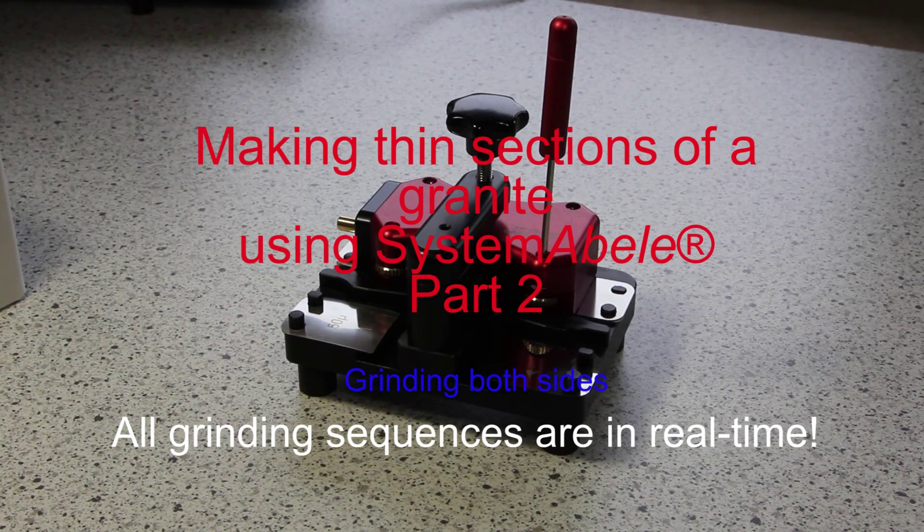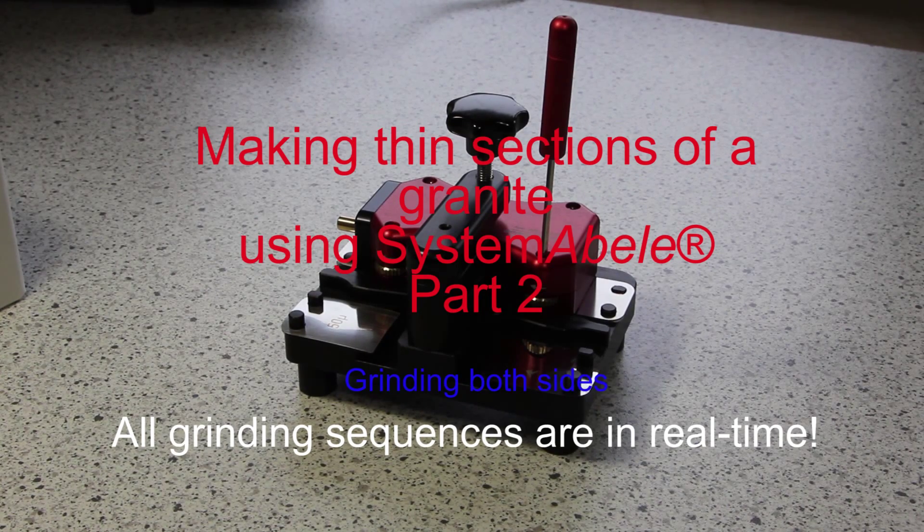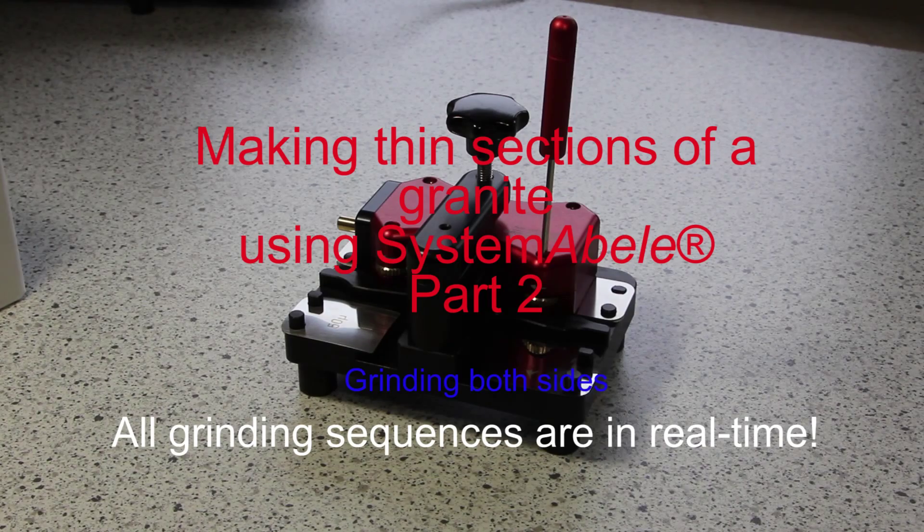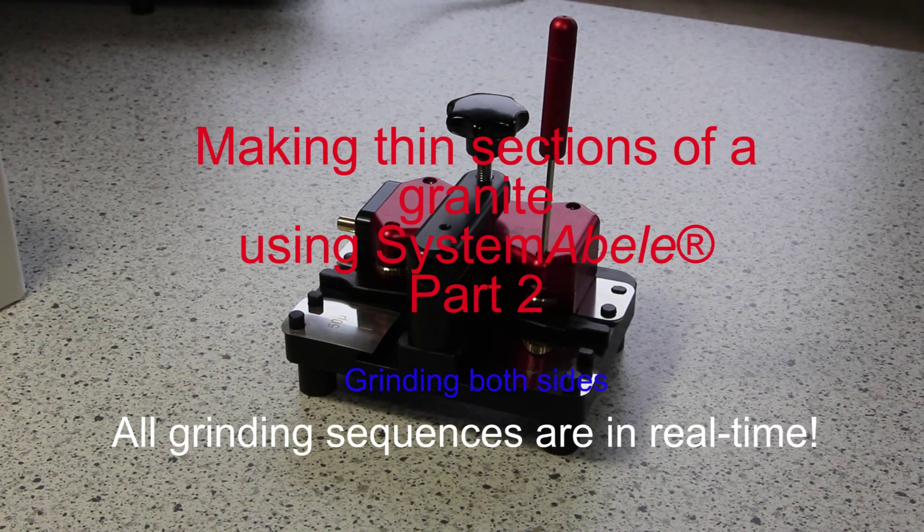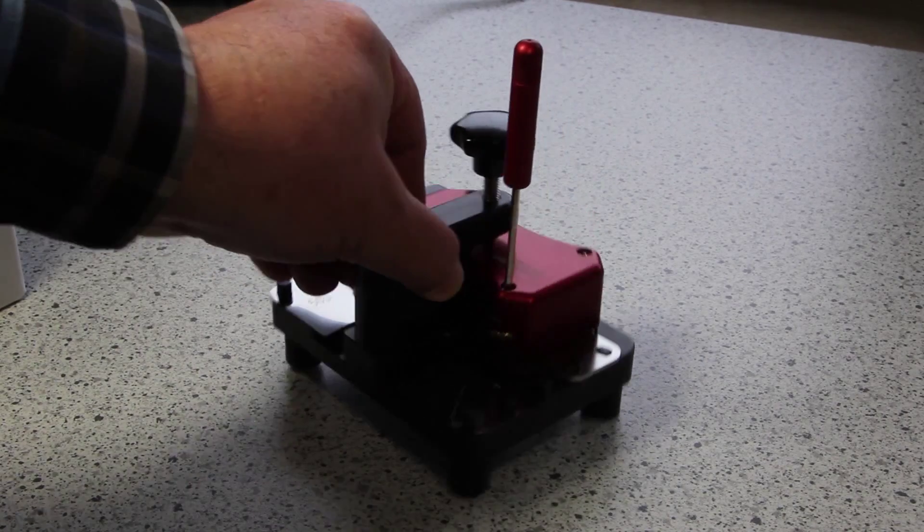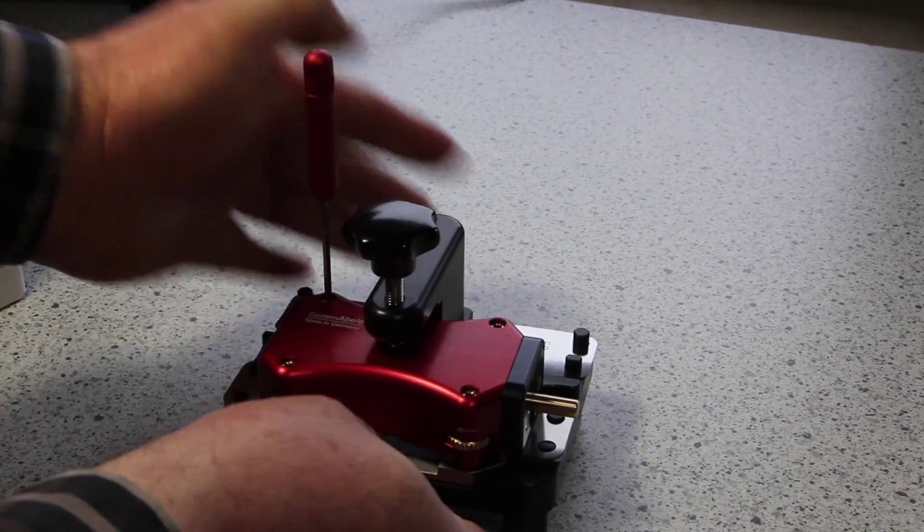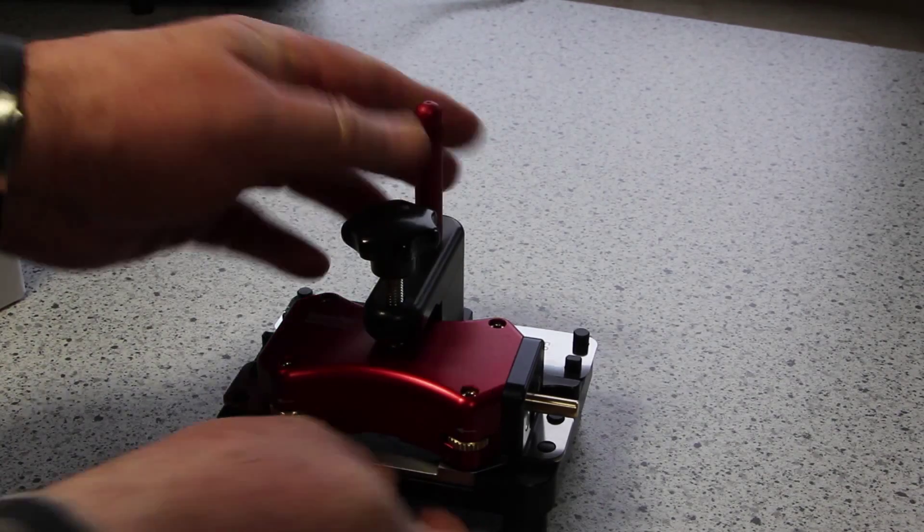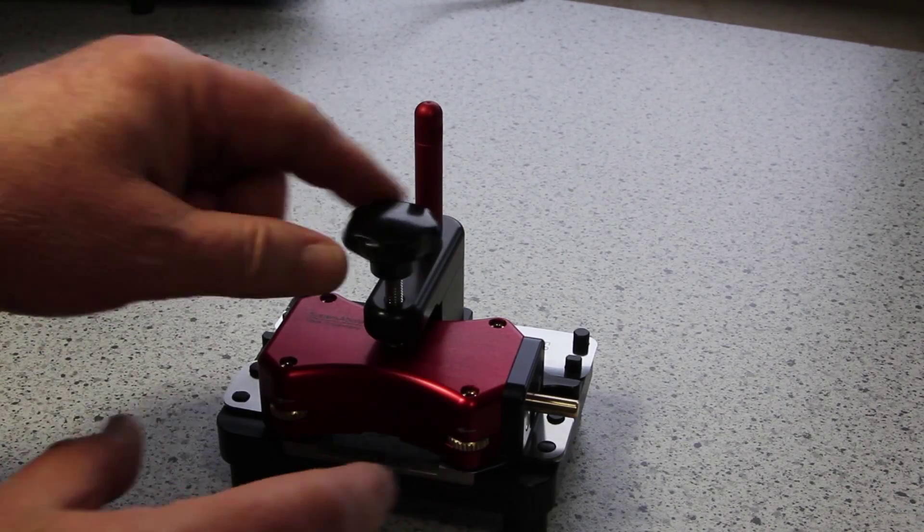This is part two of making a thin section of a granite. I've adjusted the mount before, now I turn the setting device around again and I take out the mount.